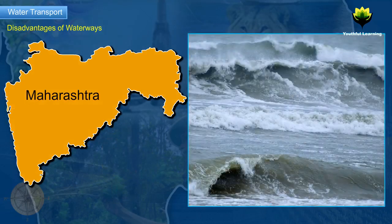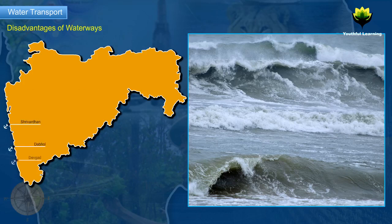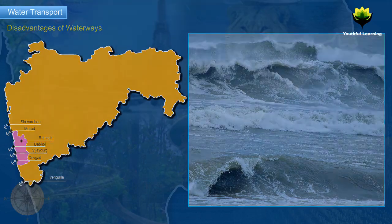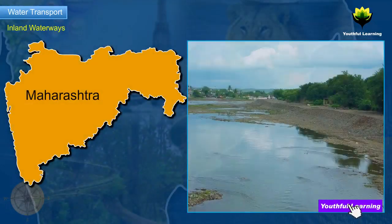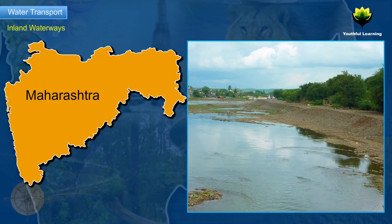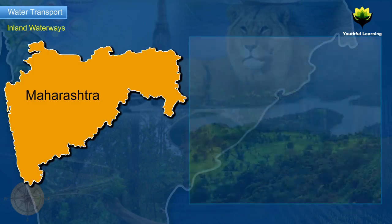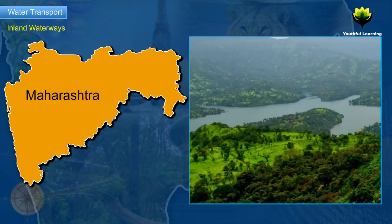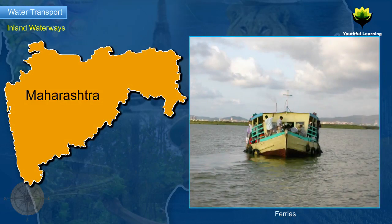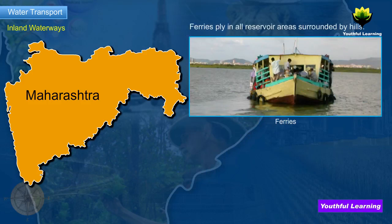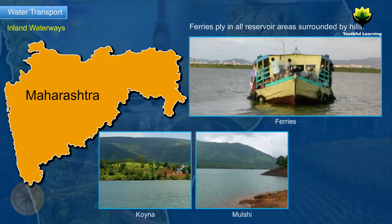Some of the minor ports are Srivardhan, Dhabol, Devgad, Ratnagiri, Vijaydurg, Murud and Vengurla etc. Inland Waterways: The rivers in Maharashtra are shallow and dry up in the summer as they are rain-fed. Further, they pass through rough terrain. As a result, the rivers in the state cannot be used as waterways. Ferries are not commonly used as means of transport to cross rivers, except in areas nearby reservoirs where accessibility is limited. Ferries ply in all reservoir areas which are surrounded by hills such as Koyna, Mula and Panchet.